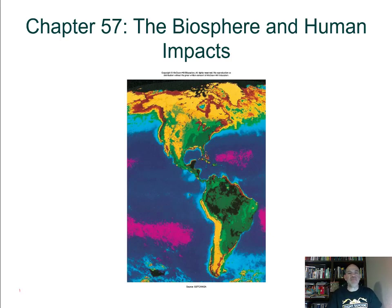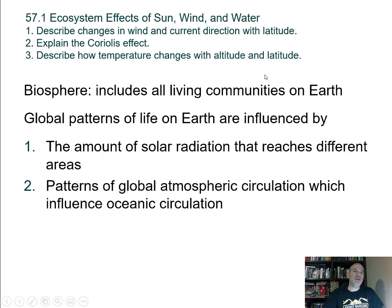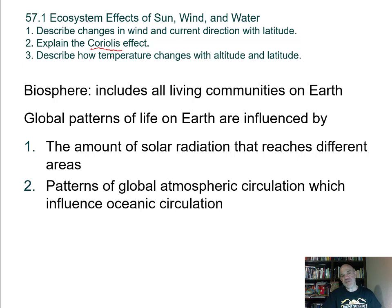In this chapter, we are going to be looking at the biosphere and human impacts on the biosphere — chapter 57 in the 12th edition. Our objectives for section 1, titled 'The Ecosystem Effects of the Sun, Wind, and Water,' are: describe changes in wind and current direction with latitude, describe the Coriolis effect, and describe how temperatures change with altitude and latitude as you move from the equator toward the poles.